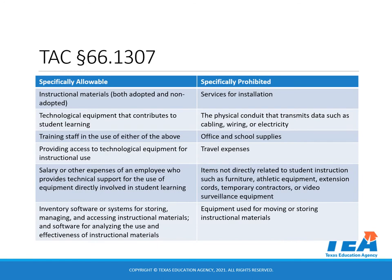Allotment Disbursement Request. When TEA reviews allotment disbursements, we are comparing your items and services to the Texas Administrative Code, Chapter 66.1307, subsections F and G. Specifically allowable items and services.